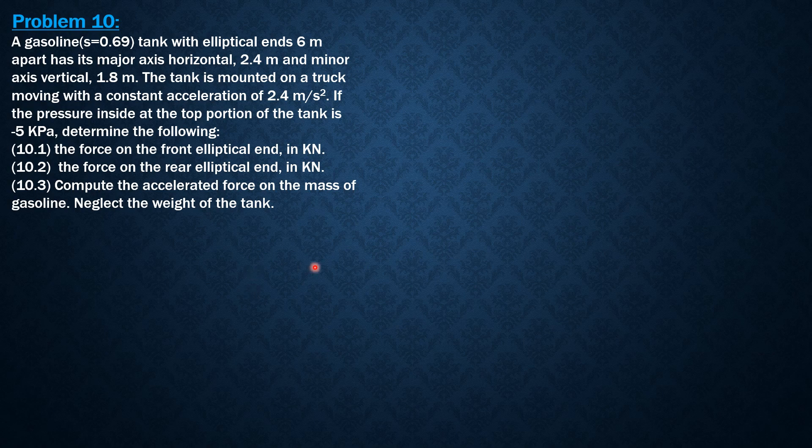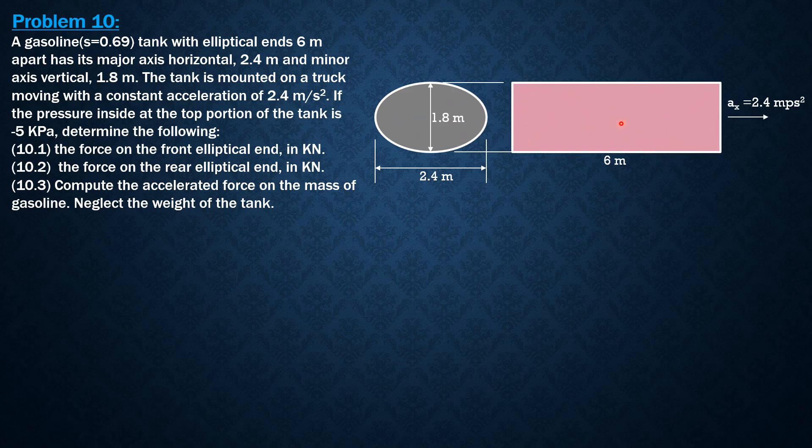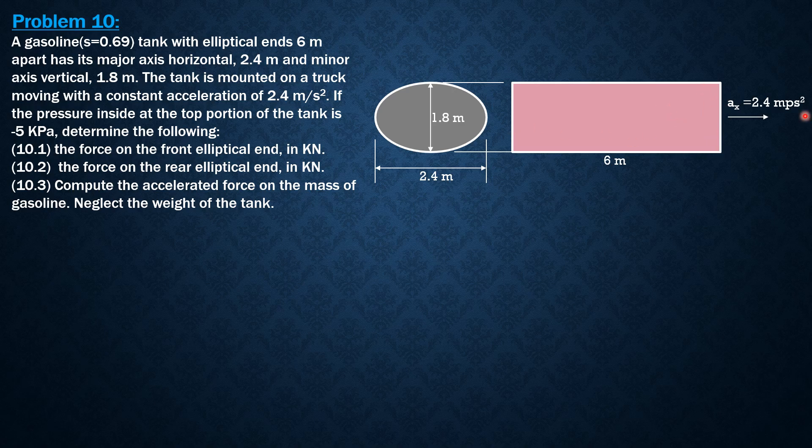So let's draw the figure. Of course, we'll just draw the tank. No need to draw the truck anymore because the tank is accelerated. The gasoline is accelerated inside this elliptical tank 6 meters, and the ends are elliptical 2.4 major axis horizontal and 1.8 minor axis vertical. So in other words, the semi-major axis is 1.2, half of 2.4, and the semi-minor axis is 0.9.